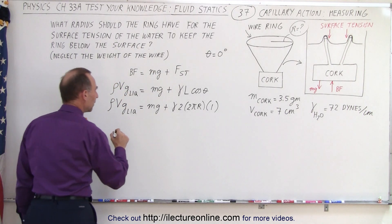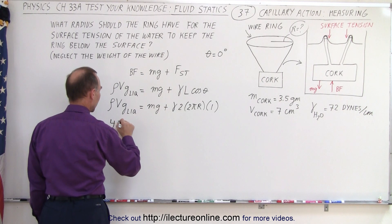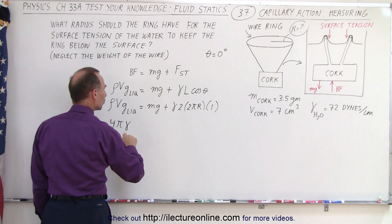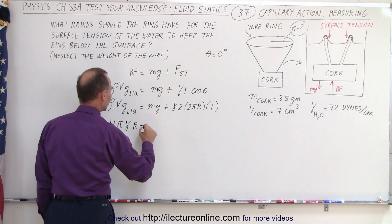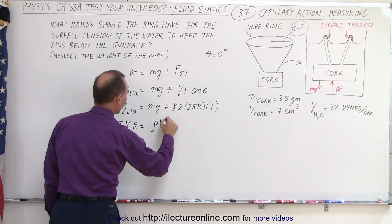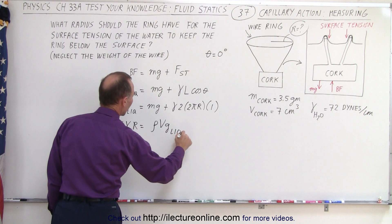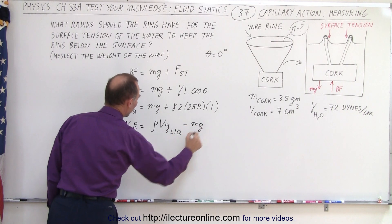So that means we have 4π surface tension times r equals ρVg of the displaced liquid minus the weight of the cork.